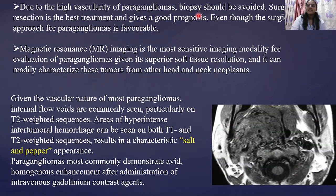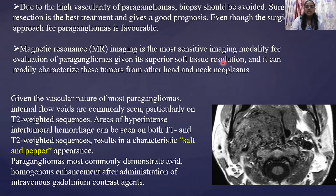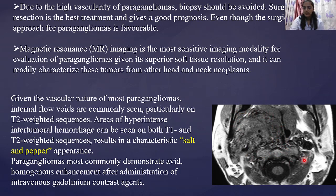Biopsy is generally avoided in these patients because of the high vascularity of the tumor, and the treatment of choice is surgical resection. MRI is also very sensitive as it can differentiate soft tissue resolution and distinguish paragangliomas from other neck masses. Although MRI was not performed in this patient, the characteristic appearance on MRI is a salt-and-pepper appearance — salt representing the white areas and pepper the black areas.